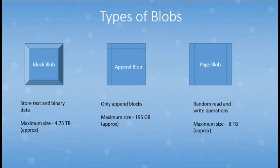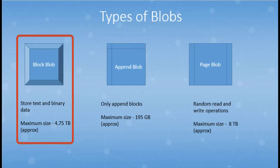And now let's discuss about the types of blobs. The blob is categorized into three types: block blob, append blob, and page blob. Block blobs are broken down into smaller units called blocks, and they are used to store text and binary data with a maximum size of about 4.7 terabytes. Block blobs are made up of blocks of data that can be managed individually.